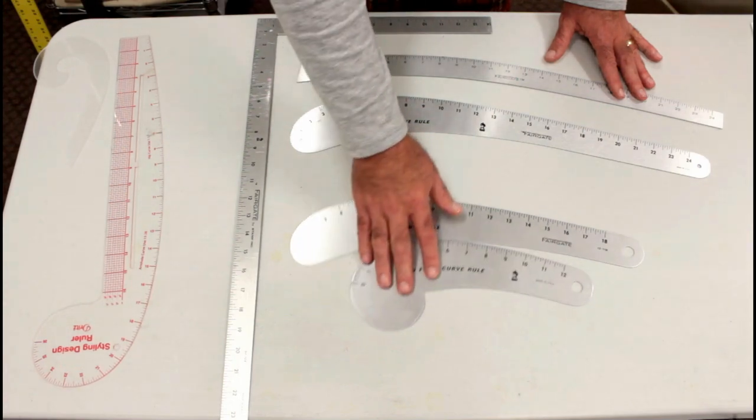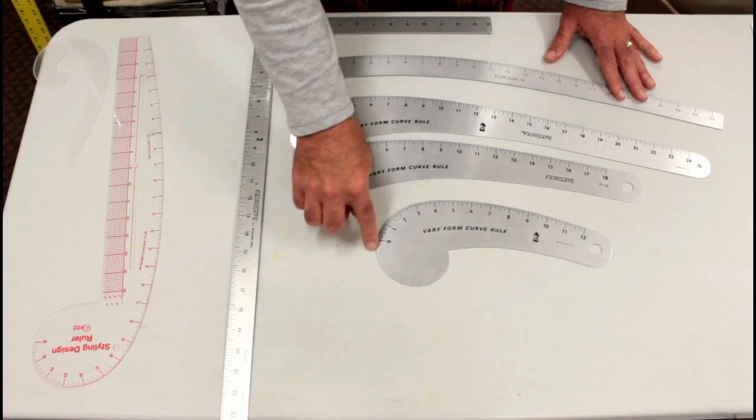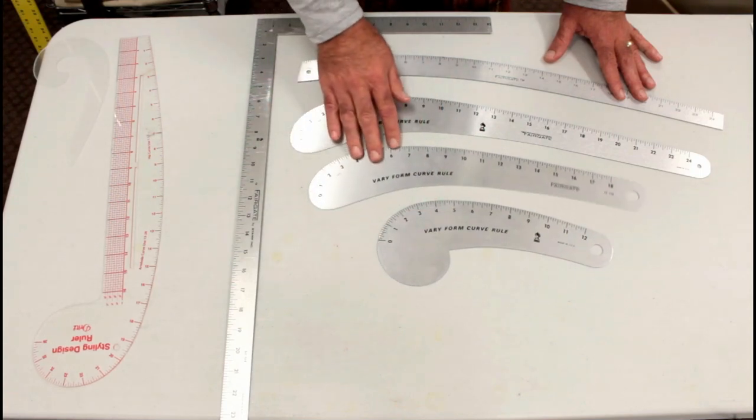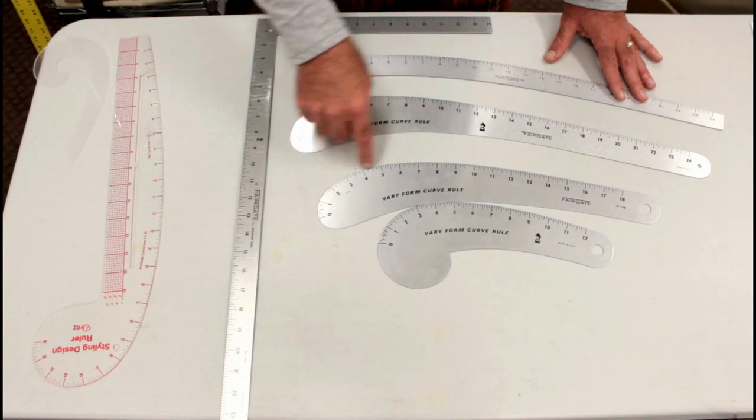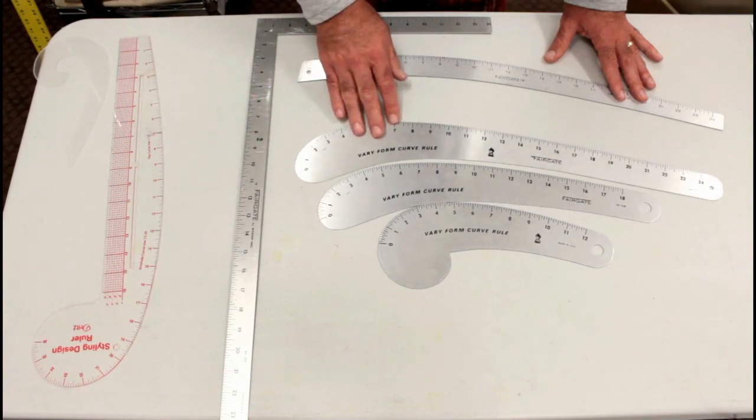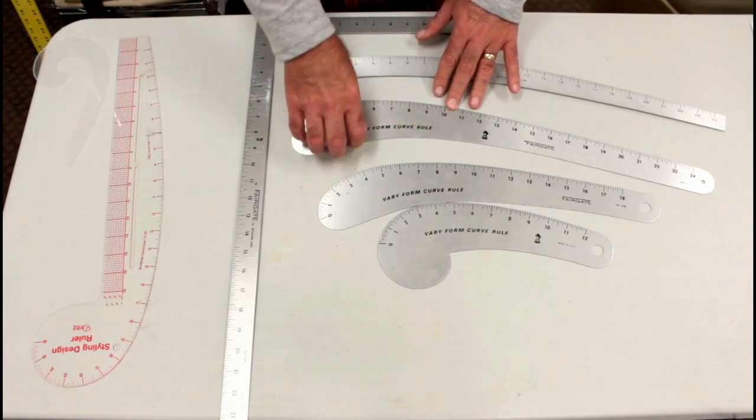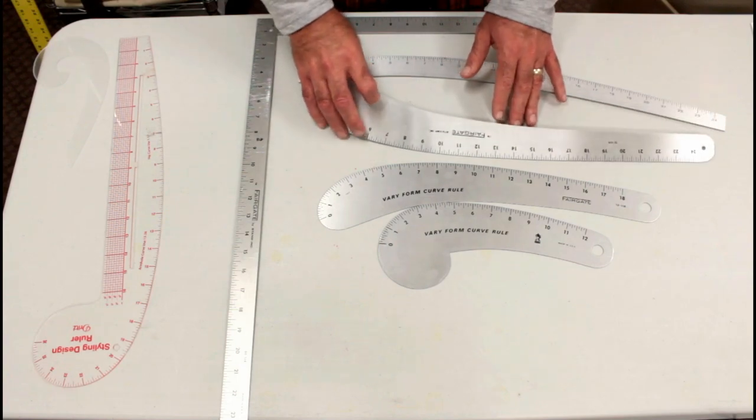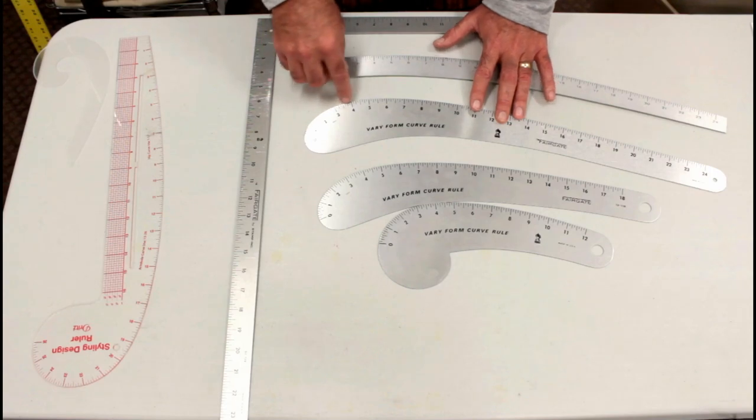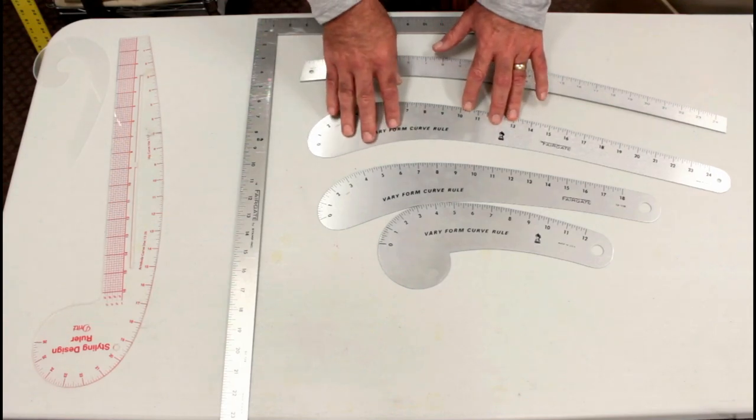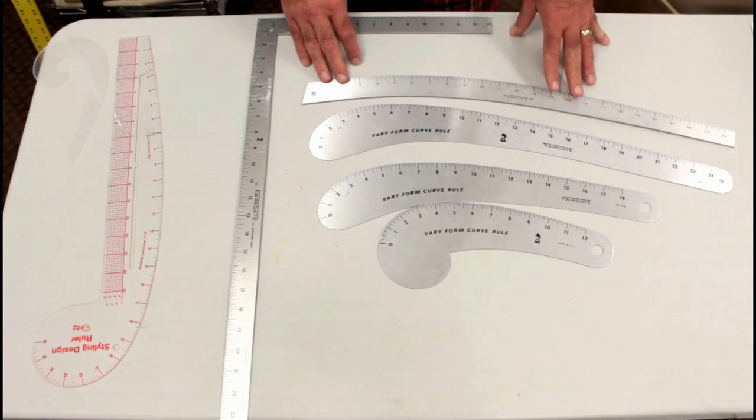And you've got the small one here for like armholes and necklines in this area. And a little tighter curve around here for various forms on the body. And then this one, you can do it on either side. It's designed on this side, but you'll find situations where you can use this side also. So don't necessarily limit yourself to this outer piece because sometimes you can come in and use this too. Just flip it over to get to the form design that you want.